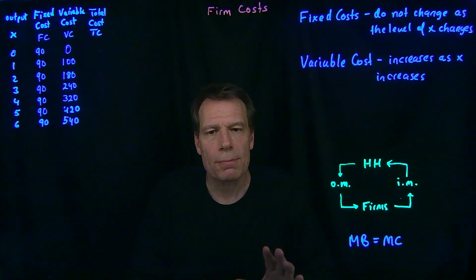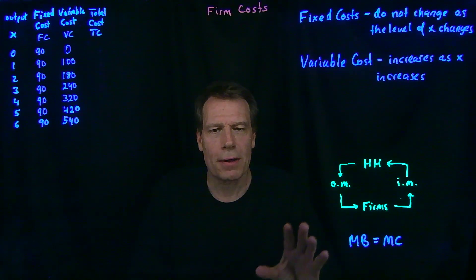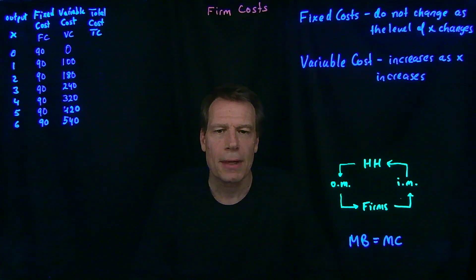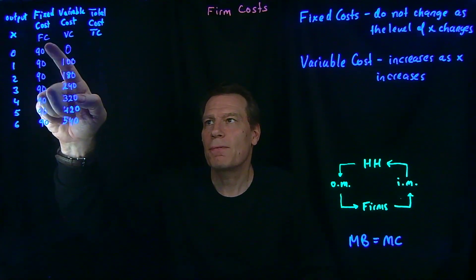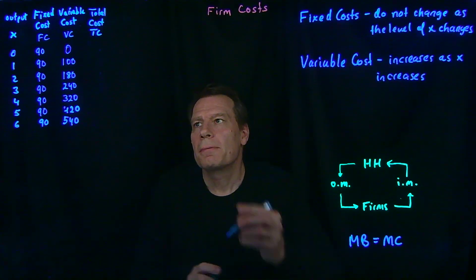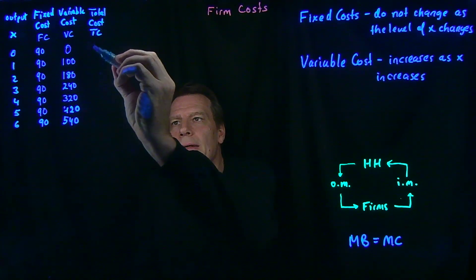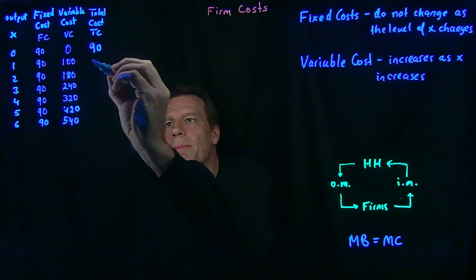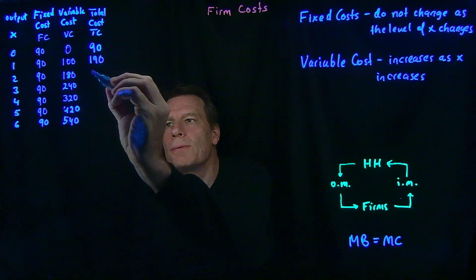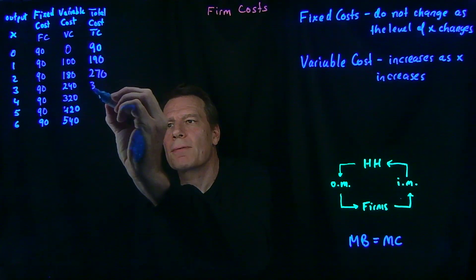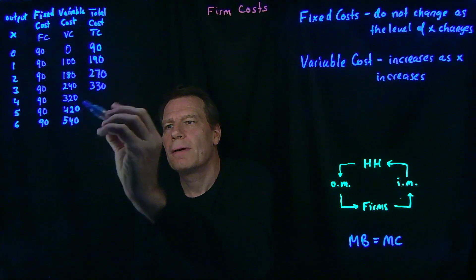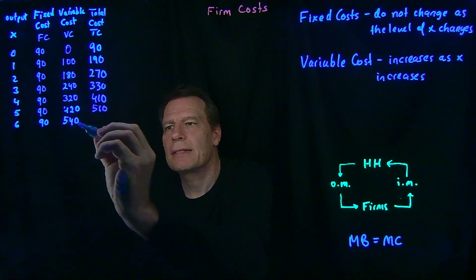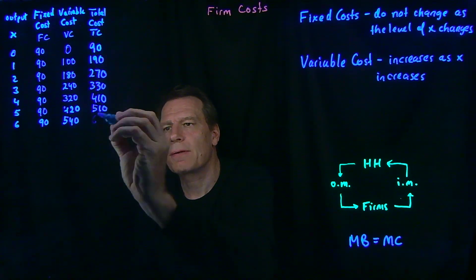Once we have those two types of costs, we can derive a number of other columns for the table we're going to generate. The first we're going to derive is the total cost. The total cost is just the sum of the fixed cost and the variable cost. So if you produce nothing, your total cost is 90 — the 90 fixed cost plus the zero variable cost. If you produce one unit it's 190, for two it's 270, for three it's 330, for four it's 410, for five it's 510, and for six it's 540 plus 90, which is 630.